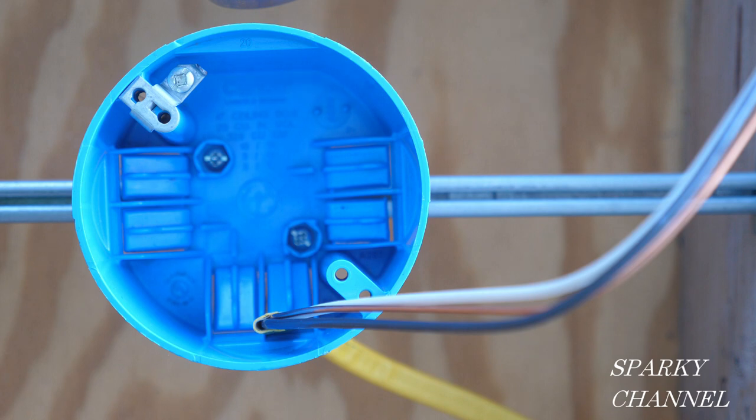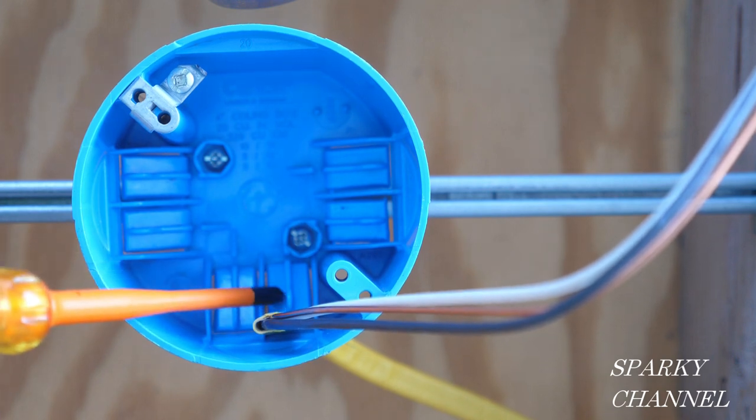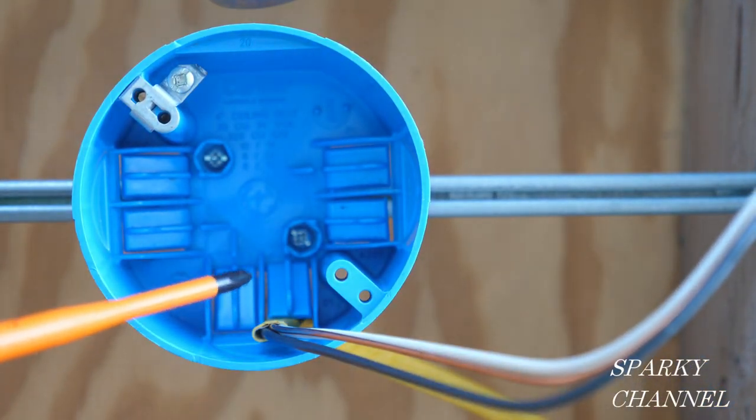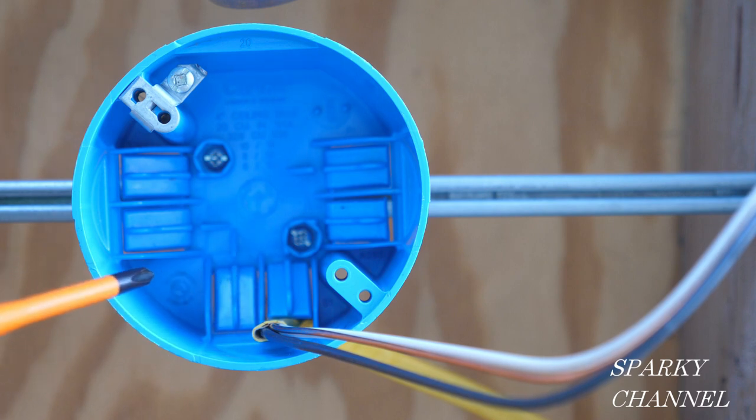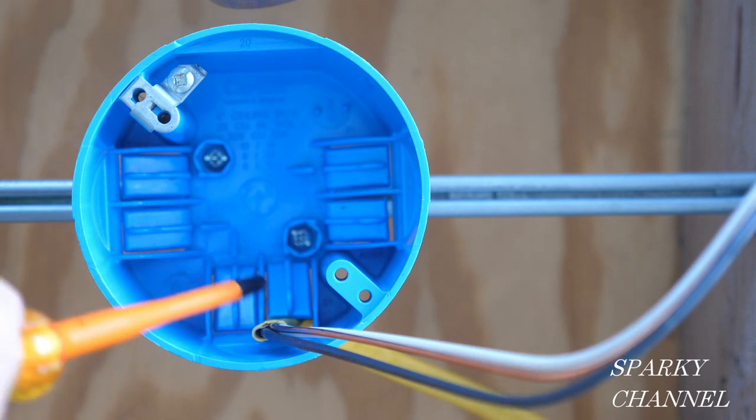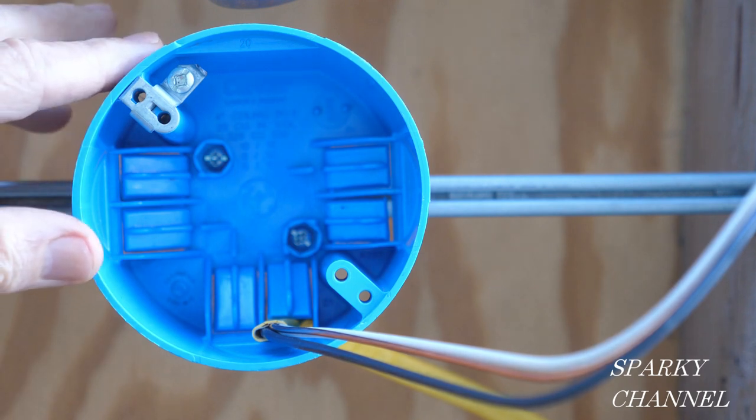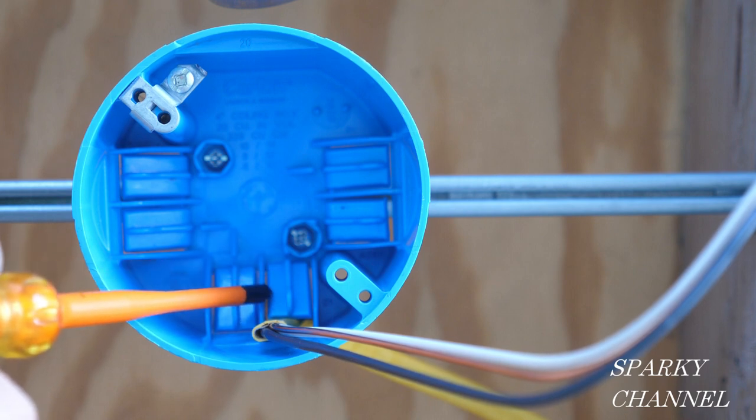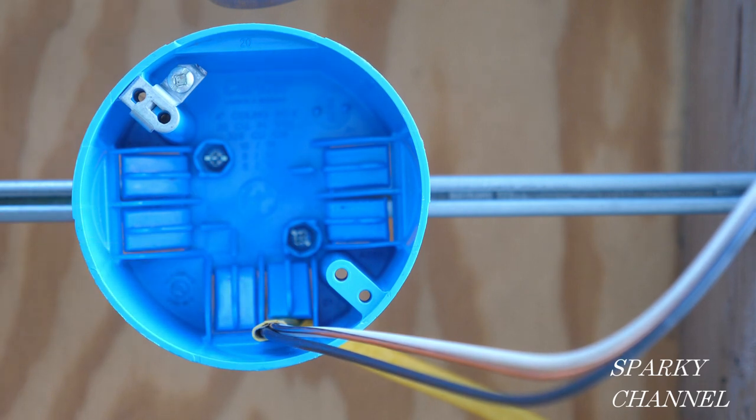My question to you is, do you think that this clamp right here, this integral clamp, is considered to be an interior clamp in the 2020 NEC? Because we need to know when we do box fill calculation, we need to know if this is counted as an interior clamp or not. We need clarity. Let's look in the actual 2020 NEC code and let's look for clarity on this.